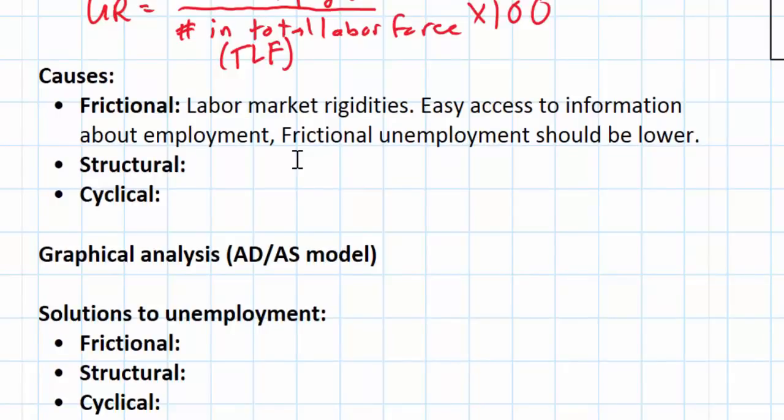So what are the causes of structural unemployment? Technological change that makes certain types of labor redundant—for example, robots come into a factory and replace factory workers. Technological change can cause structural unemployment. Globalization is the second major cause of structural unemployment. As more and more goods are produced in low-wage countries such as China, around Southeast Asia, or Latin America, workers in the industries that are no longer producing those goods in the rich world will become structurally unemployed.